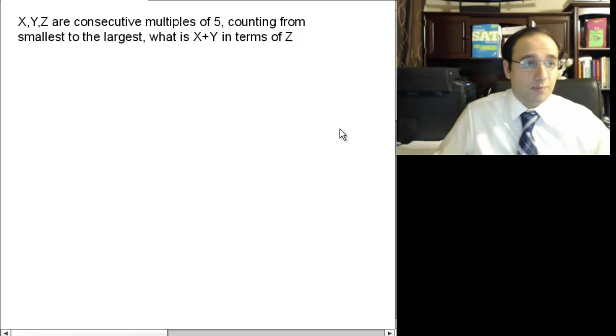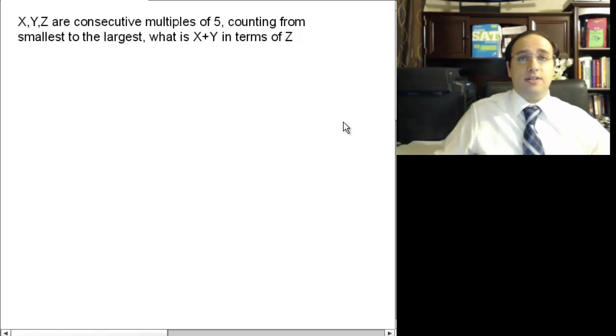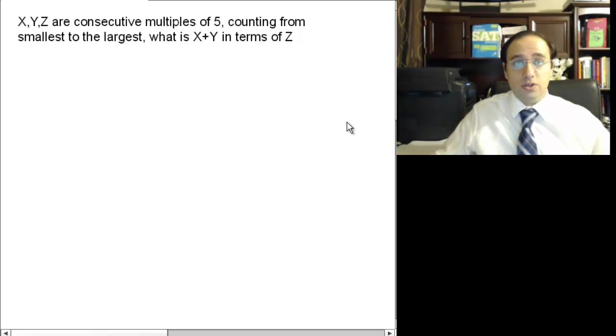Hi. Let's take a look at this question together. X, Y, and Z are consecutive multiples of 5. Counting from smallest to largest, what is X plus Y in terms of Z?